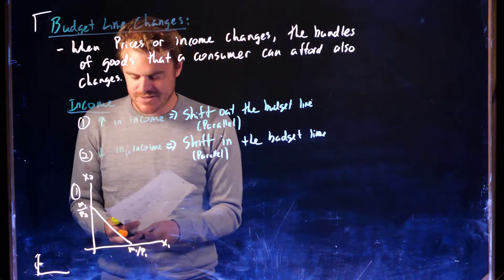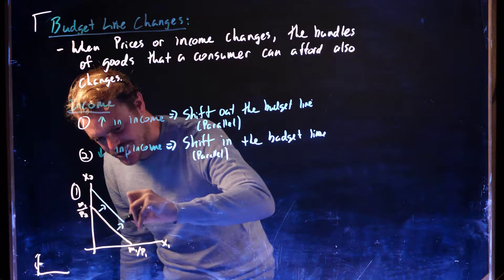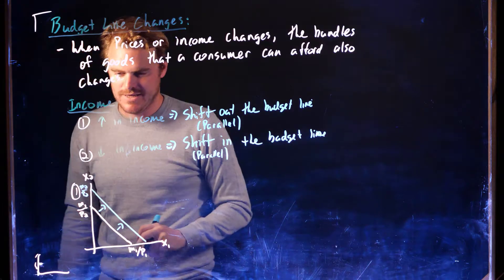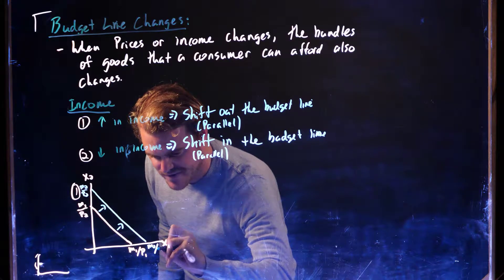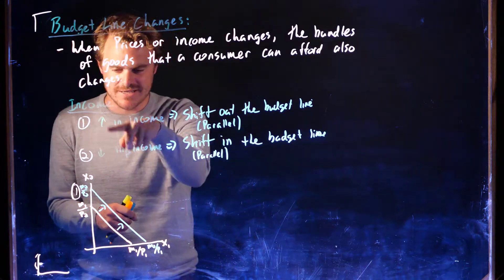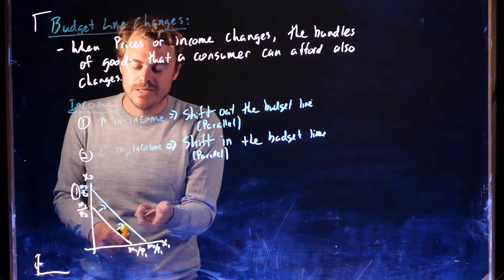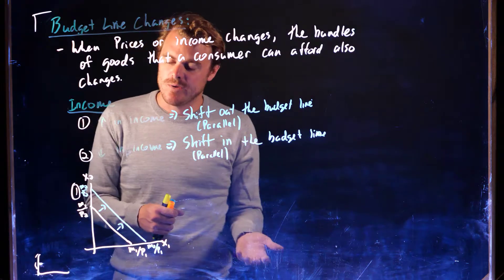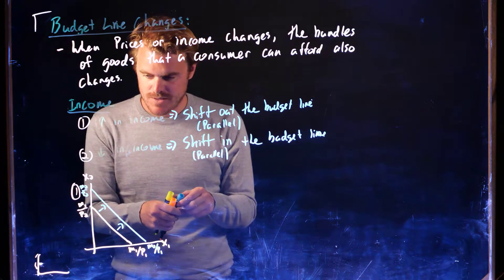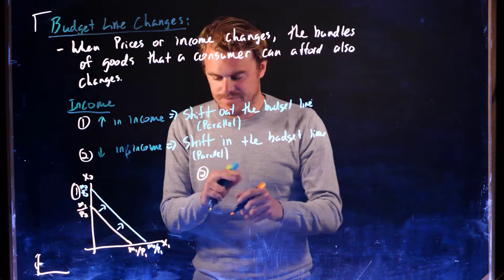Originally, let's say this is the budget line where the y-intercept is M1 over P2 and the x-intercept is M1 over P1, where M1 is the original budget. A budget increase is going to cause this parallel shift out. The new budget divided by P2 is the new y-intercept, and the new budget divided by P1 is the new x-intercept. Because M2 is bigger than M1, we get this parallel shift out — the slope doesn't change, the opportunity cost is still the same.